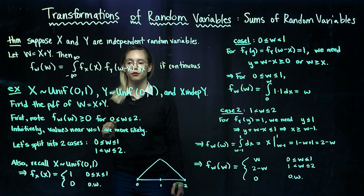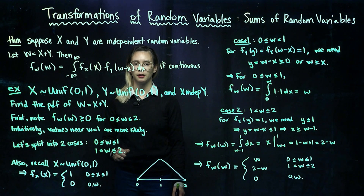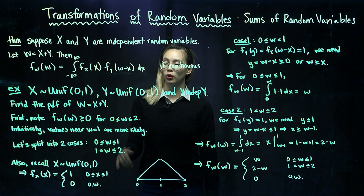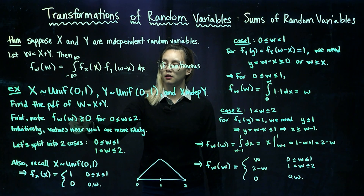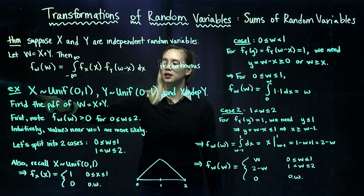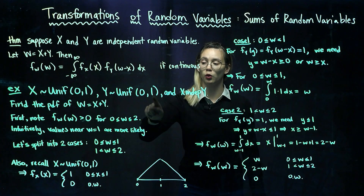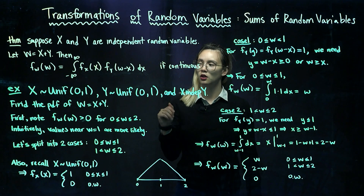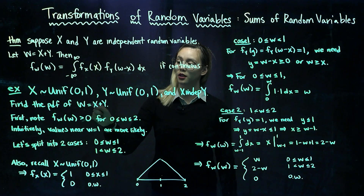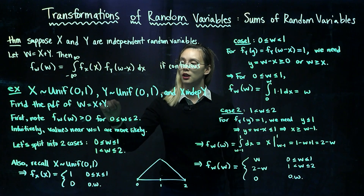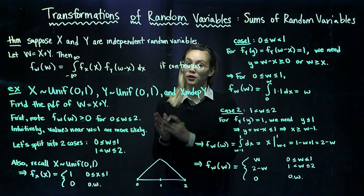We're going to find the PDF for w, which is equal to x plus y. Before we dive into applying this theorem, let's note a couple things. Where is our PDF going to be positive? The PDF for x is positive for x values between 0 and 1, and the PDF for y is positive for y values between 0 and 1. Since w equals x plus y, the smallest value w can take is 0 and the biggest is 2, so w takes values in the interval 0 to 2.